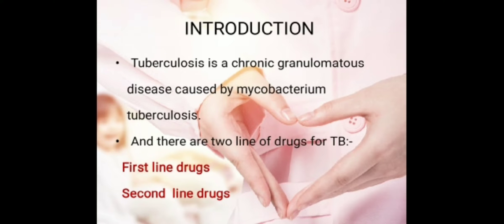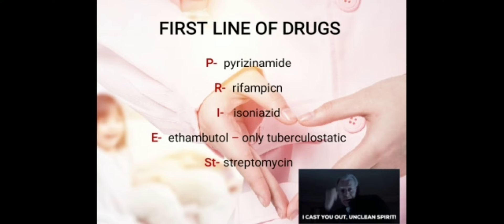Introduction: tuberculosis is a chronic granulomatous disease caused by Mycobacterium tuberculosis. There are two lines of drugs for TB — first line and second line of drugs. First line of drugs is called so because it has superior efficiency. Remember that as an extra point. The first line of drugs can be remembered with the mnemonic PRIEST.